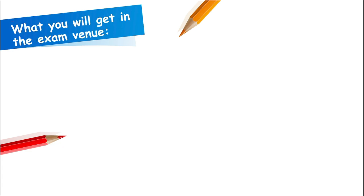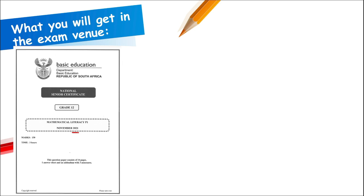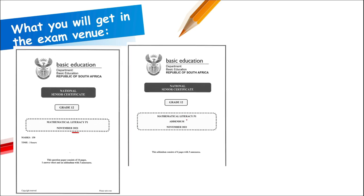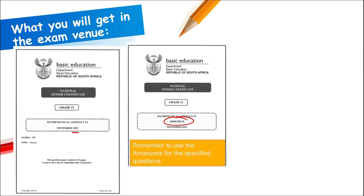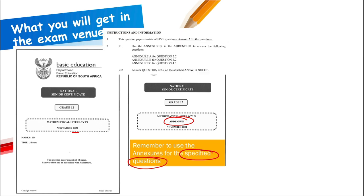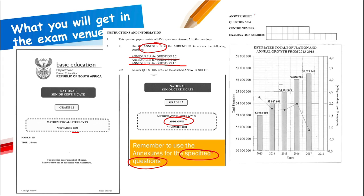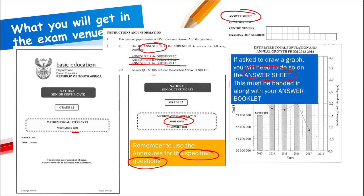In the exam venue, you'll receive a question paper, an addendum with annexures, and possibly an answer sheet for drawing graphs. Remember to use the annexures for the specified questions — for example, Annexure A for question 2.2, Annexure C for 4.3. Any graphs must be drawn on the answer sheet and handed in along with your answer booklet.